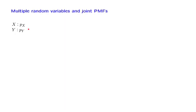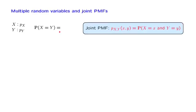For example, if you wish to answer whether the numerical values that the two random variables happen to take are equal, and what is the probability of that event, you will not be able to answer this question if you only know the two individual PMFs. In order to answer a question of this type, we will need information that tells us what values of X tend to occur together with what values of Y.